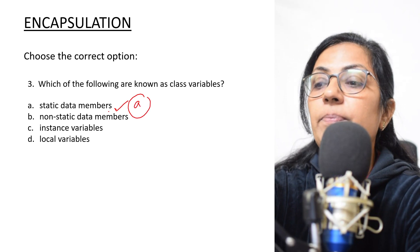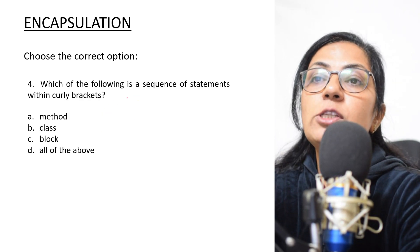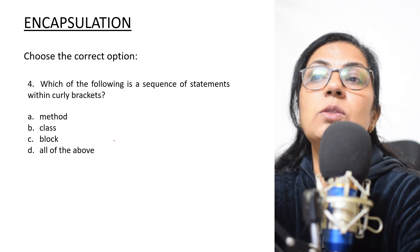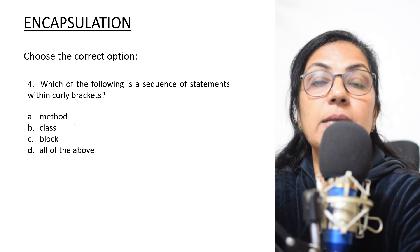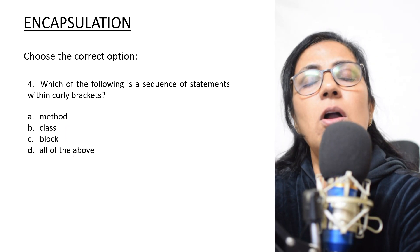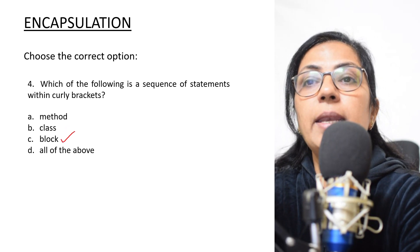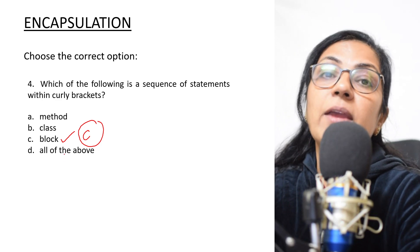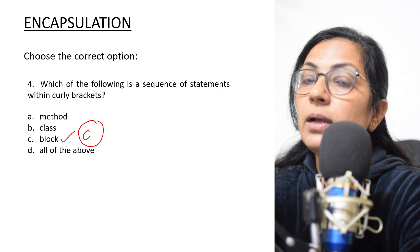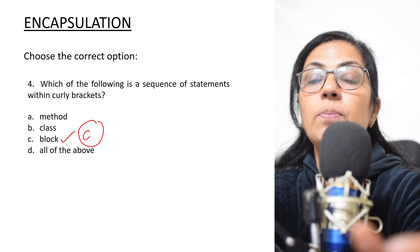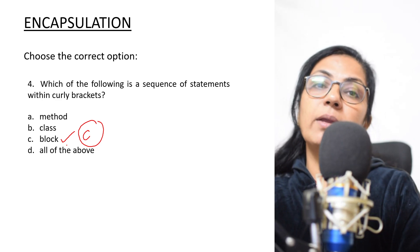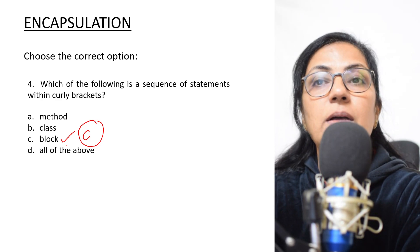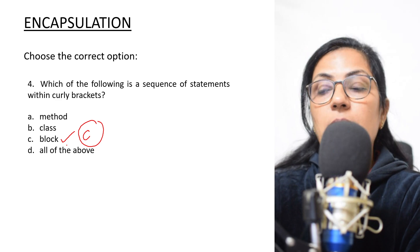Next: 'Which of the following are known as class variables?' Class variables are static data members, so option A is the correct answer. Then: 'Which of the following is a sequence of statements within curly brackets?' Options: method, class, block, or all of the above. The correct answer is option C — block. Whatever sequence of statements you write within curly braces is termed a block.